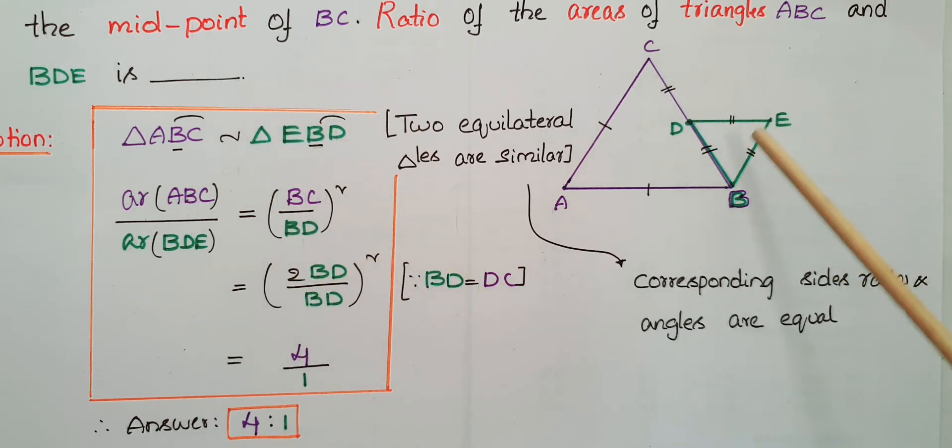That is equal to, here BC is twice of BD because this is midpoint. So 2 BD by BD whole square. Then cancel BD BD. Then 2 square is 4, 4 by 1. So the answer here is 4 is to 1.